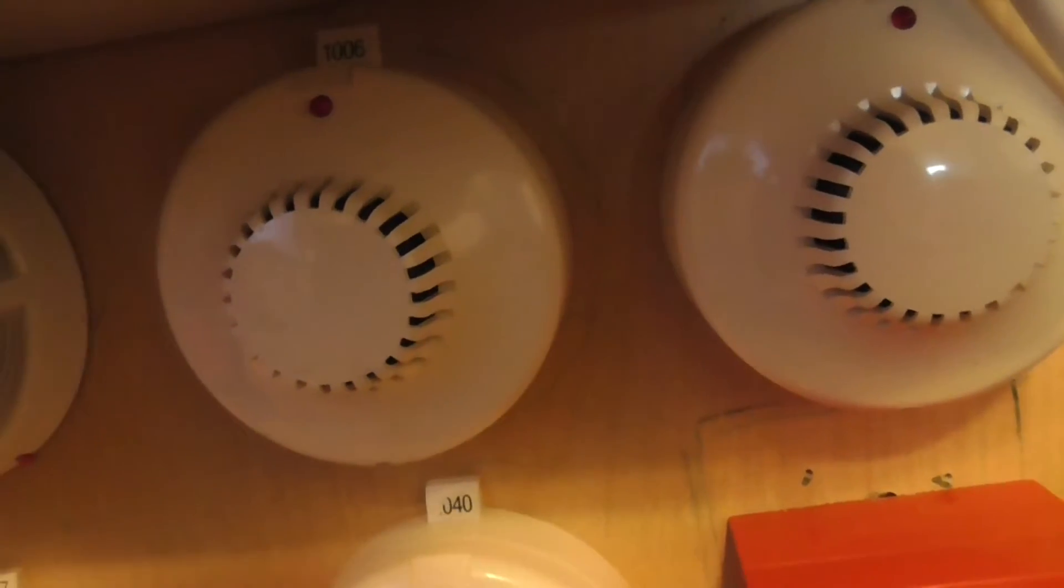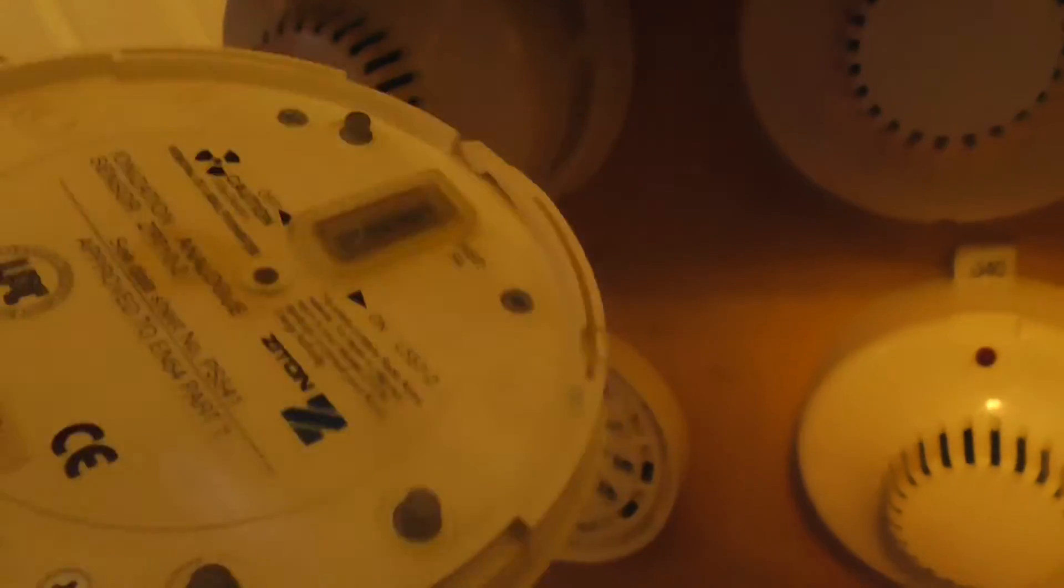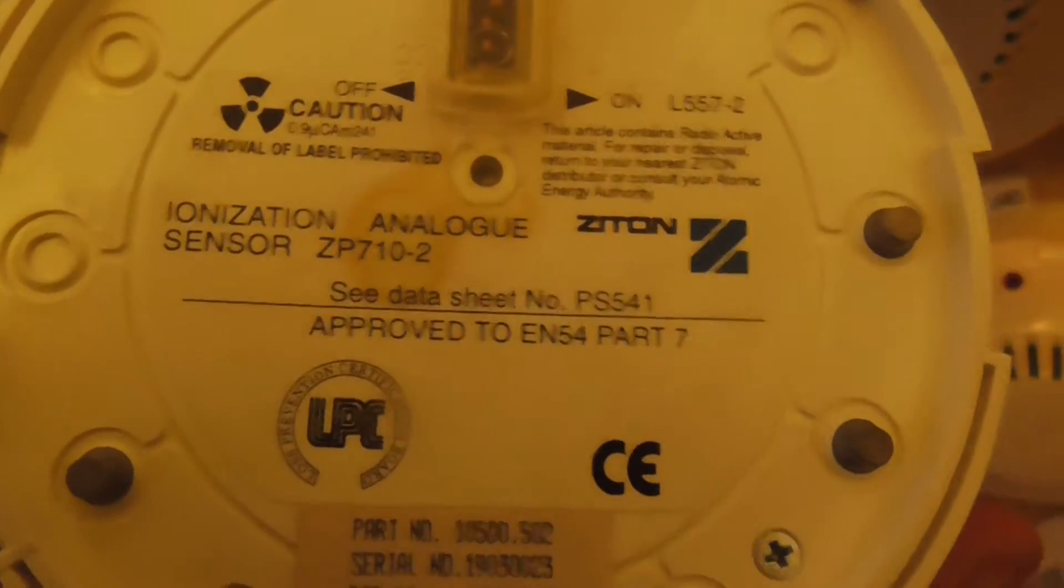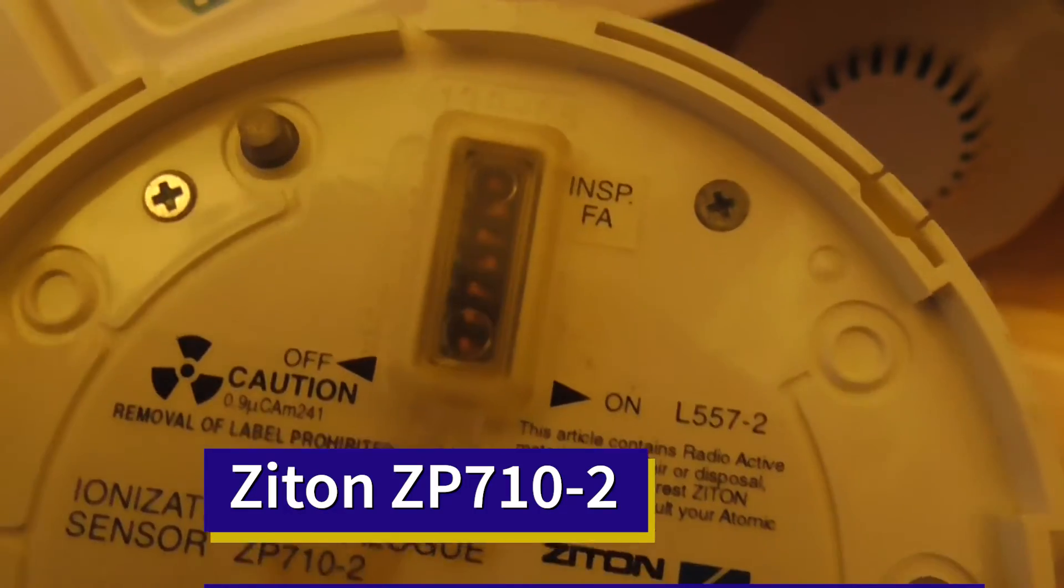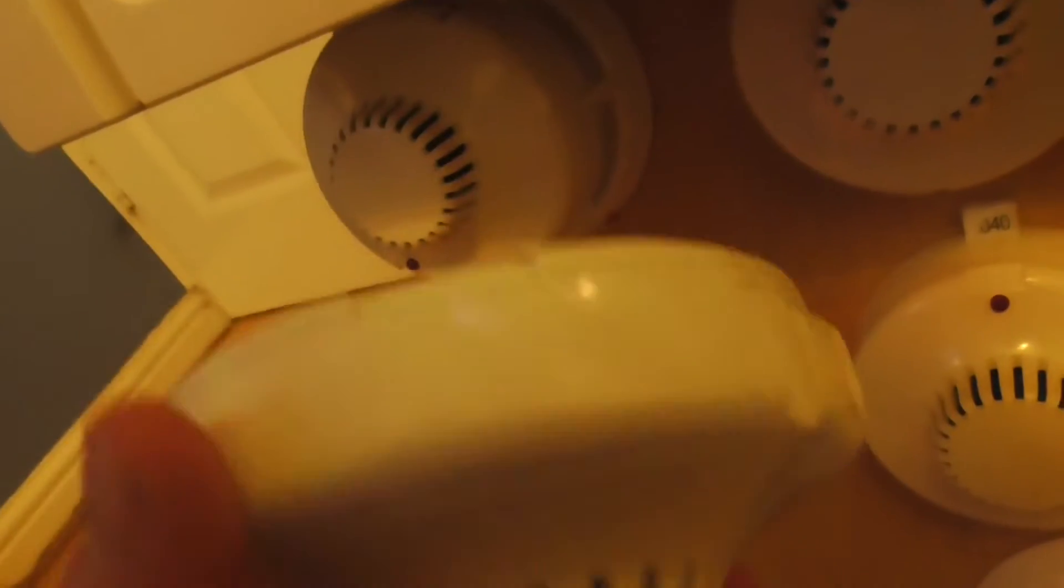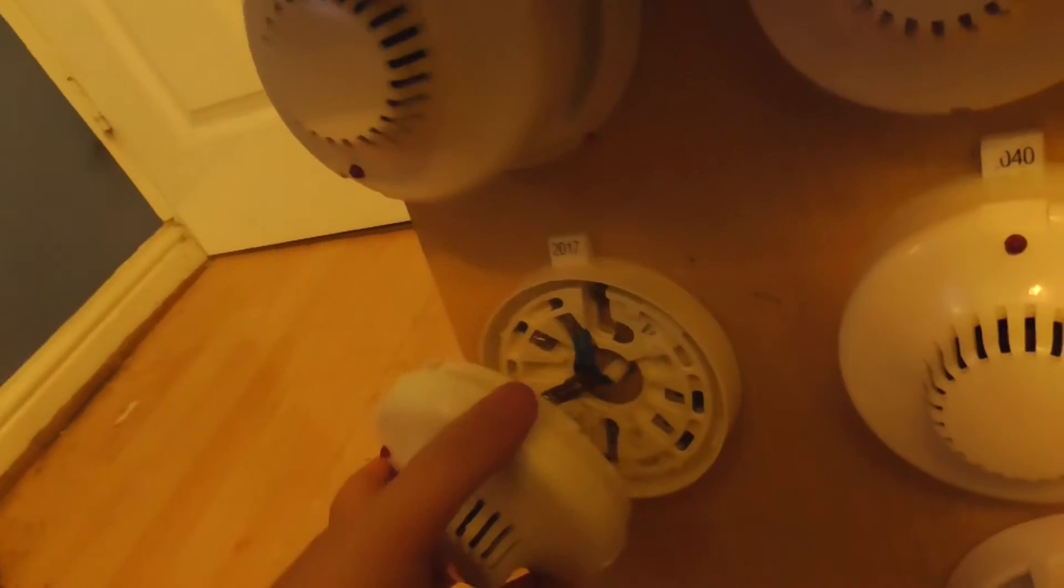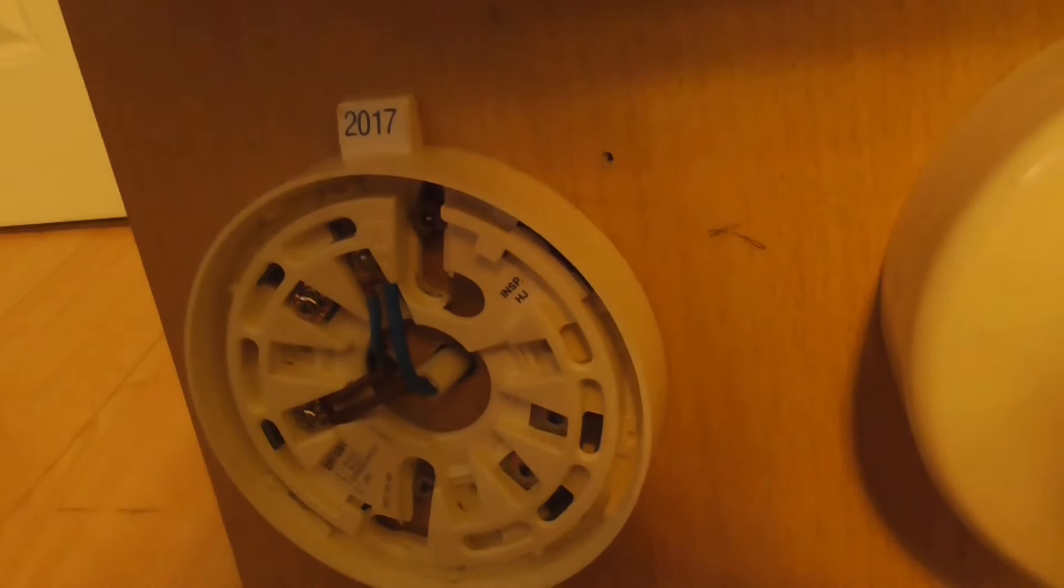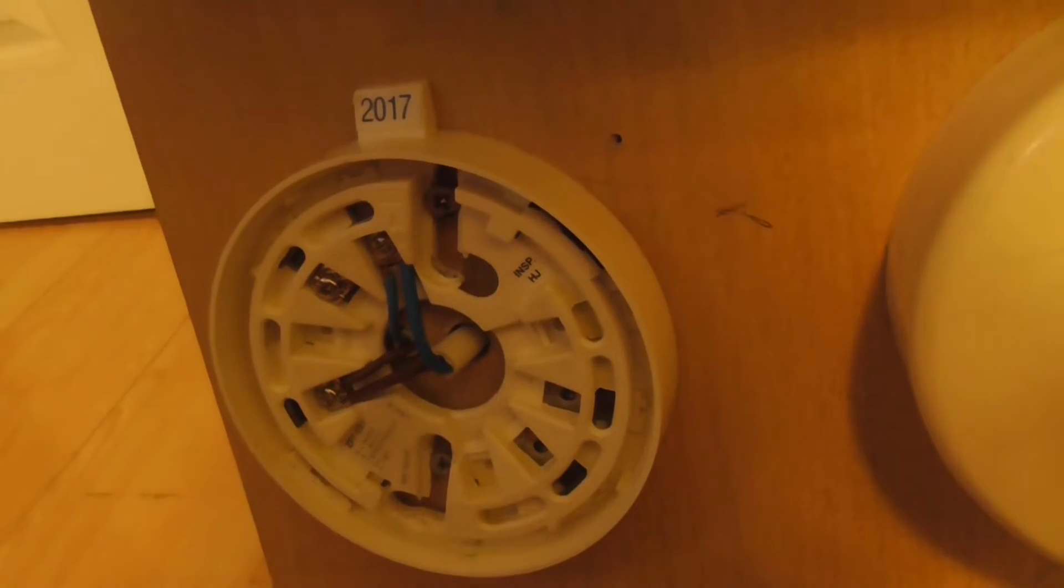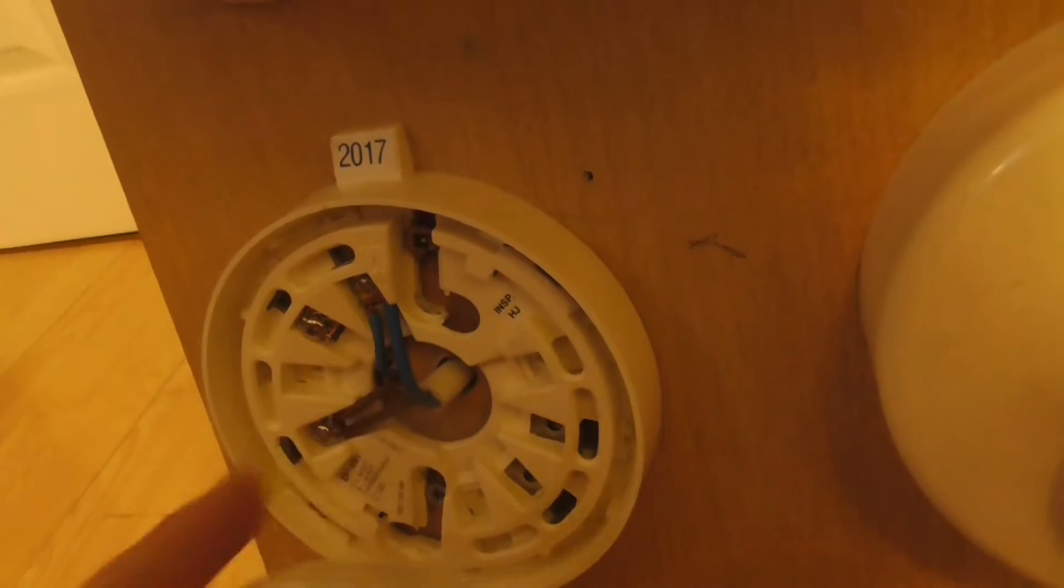These are all ZP730s apart from this one, which is an ionization one. This one is a ZP710-2. You can tell it's ionization because of the radioactive sign, and you can also tell by inside the chamber that it's ionization. There's the base by the way, terminals. You wire your two positives to one terminal on here and then the other one, your two negatives.